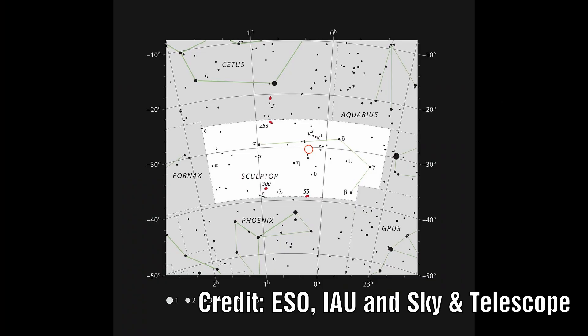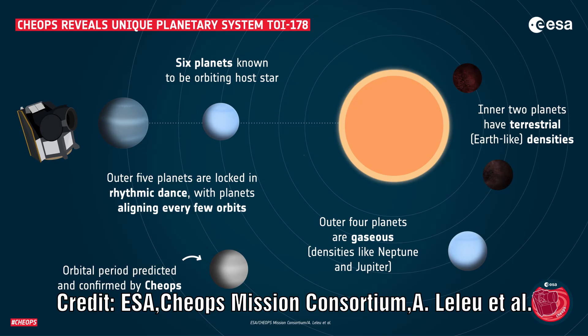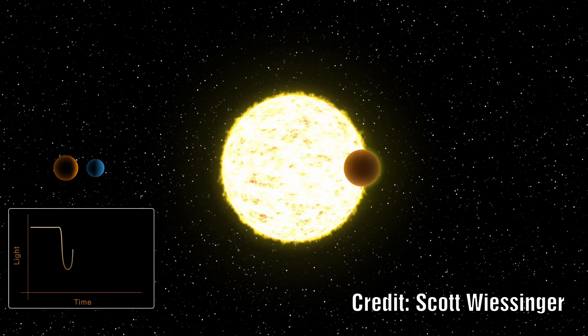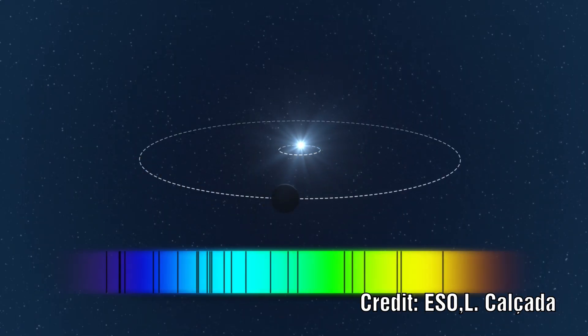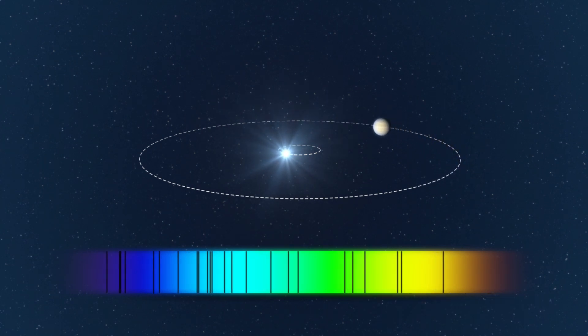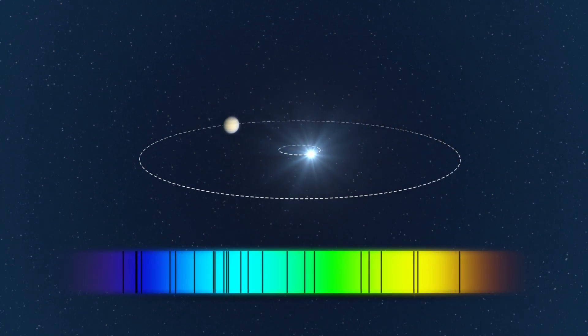These planets were discovered using a combination of telescopes and satellites and using two different methods. The first method is looking at transits. Here the light from the star dips as exoplanets pass in front of it. The second method uses radial velocity. This looks at small changes in the redshift of the star caused by the planets pulling the star towards and away from us.